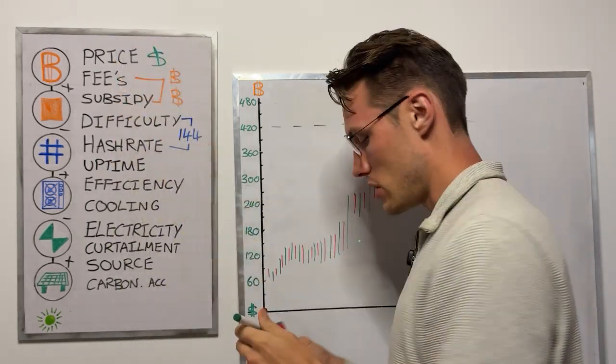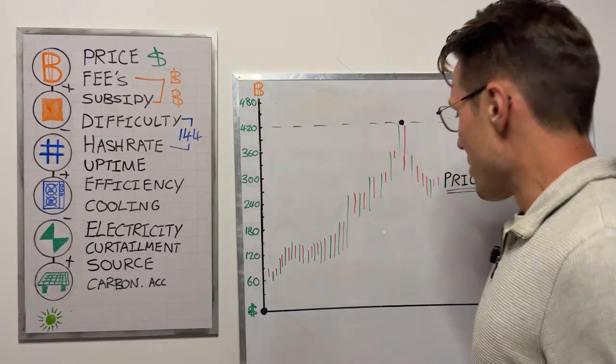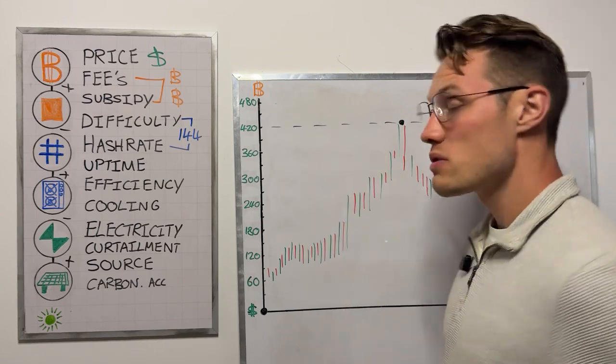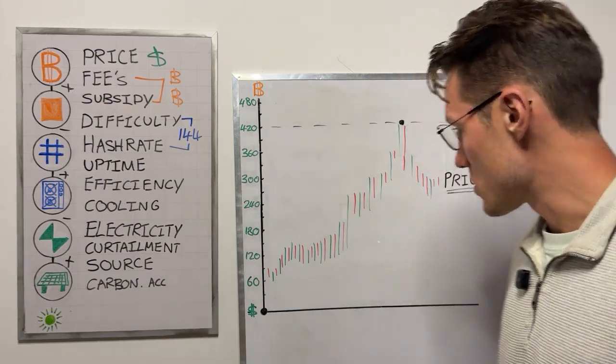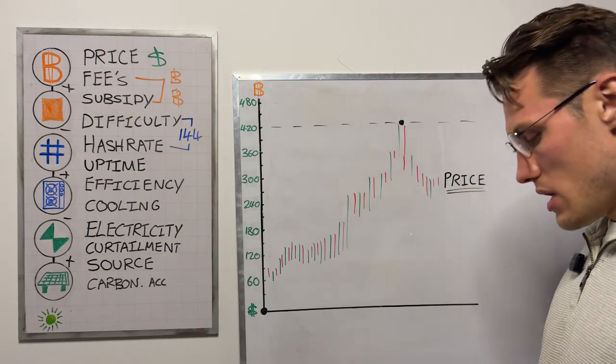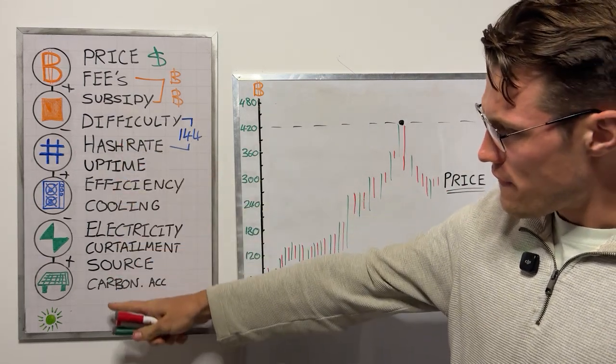And then there's this little thing called price on top when you dollarize the whole lot. In terms of price predictions, I'm just going to throw out an interesting one. I think it could go to $420,000 this cycle.